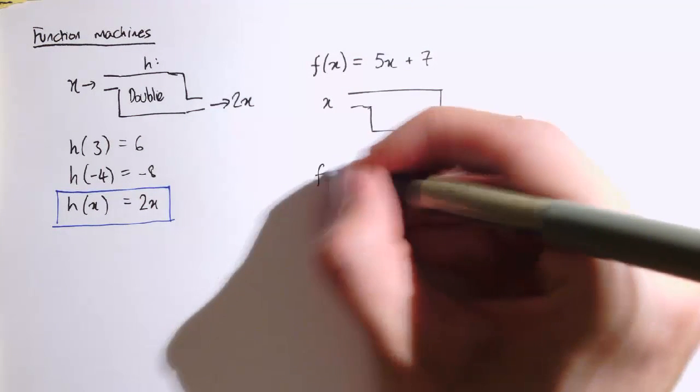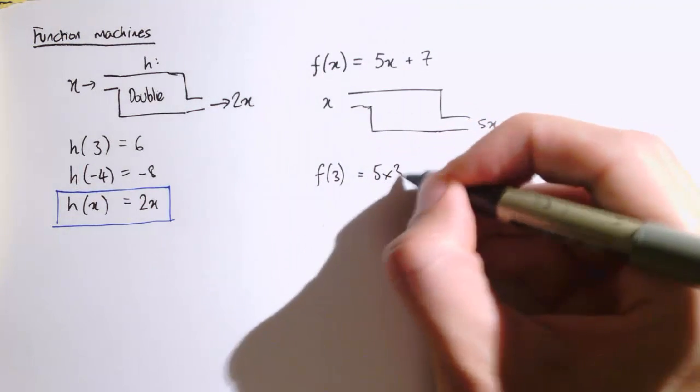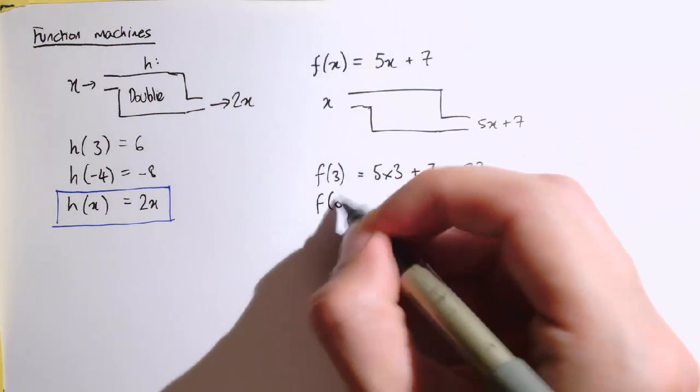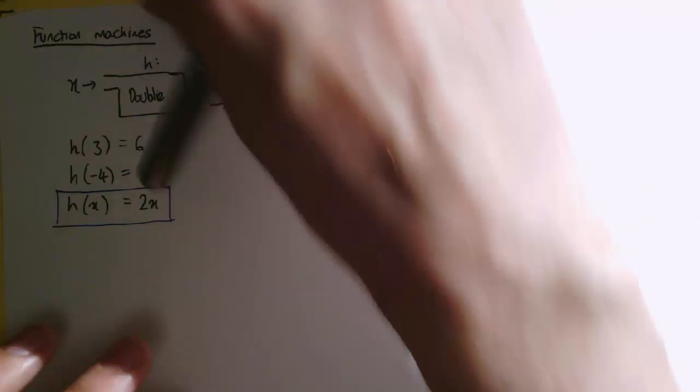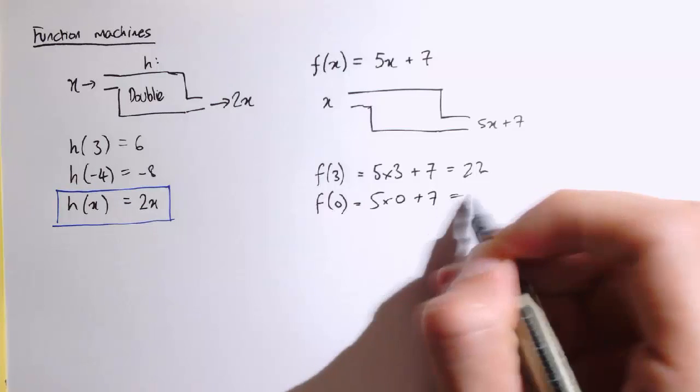So that gives 5x plus 7. So actually if I did f of 3, that would give us 5 times 3 plus 7, which is 22. If I did f of 0, that would be 5 times 0 plus 7, which is just 7.